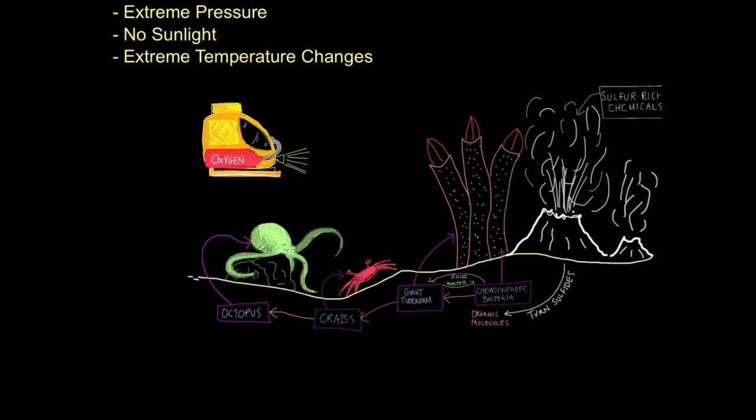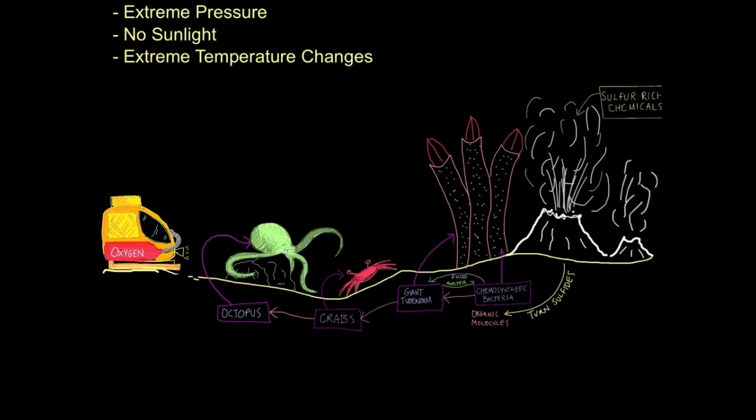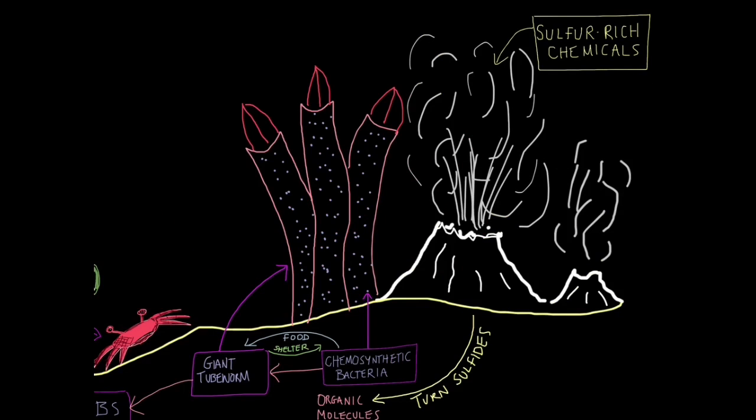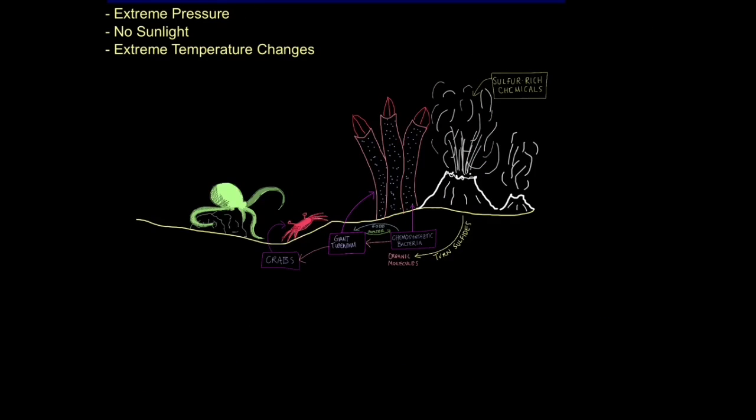So our submersible has now reached its destination on the seabed. So let's have a look what exists down here. Deep down here, we find weaknesses in the Earth's crust, exposing it to the mantle beneath. And outlets for the mantle include these hydrothermal vents, these underground volcanoes which spew out a mineral-rich soup of chemicals, particularly chemicals rich in sulphur and iron. We call them sulphides. So down here, we have extreme pressure. We have no sunlight and extreme temperature changes, incredibly hot around the hydrothermal vents and very cold away from the hydrothermal vents. It's these sulphur-rich chemicals that are the key to understanding how life can survive without sunlight.